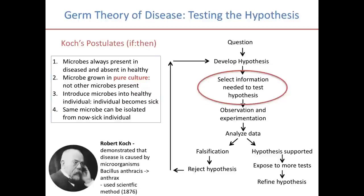The first criterion is that the microorganism or pathogen must be present in all cases of the disease. If you identify someone with that disease who does not have the pathogen, then you cannot establish that that particular microbe causes that disease. Second is that the pathogen is isolated from the diseased host and grown in pure culture — meaning a culture in which no other microorganisms are present.